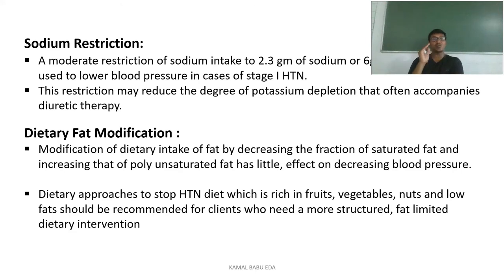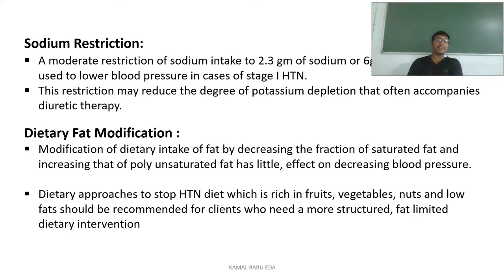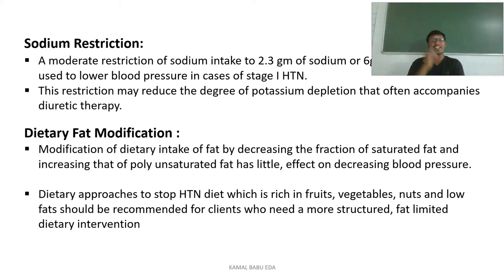For sodium restriction, a moderate restriction of sodium intake — from 2.3 grams of sodium or 6 grams of salt — can lower blood pressure in stage 1 hypertension cases. This may also reduce potassium depletion that accompanies diuretic therapy. For dietary fat modification, decrease intake of saturated fat and increase intake of polyunsaturated fat to decrease blood pressure.